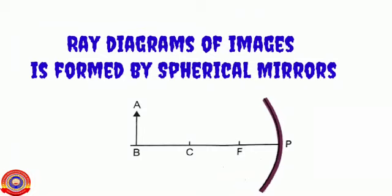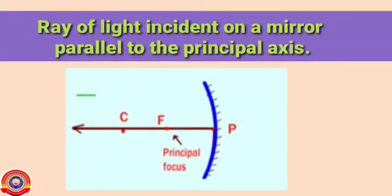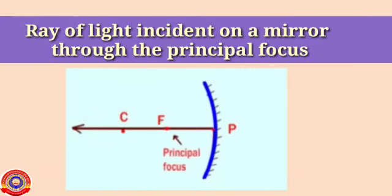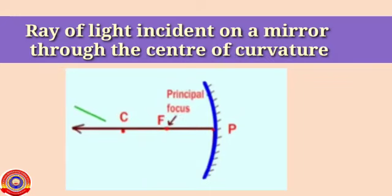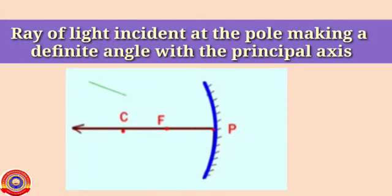Using ray diagrams, let's try to describe the position of the image and its features when objects are placed at different positions in front of a spherical mirror. For this, we can make use of any two rays of light mentioned here: a ray of light incident on a mirror parallel to the principal axis; a ray of light incident on a mirror through the principal focus; a ray of light incident on a mirror through the center of curvature; or a ray of light incident at the pole making a definite angle with the principal axis.